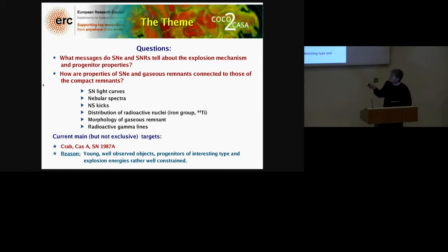We have diagnostic access to this by different possibilities which we explored recently: the light curve structures, the nebulous spectra, the neutron star kicks, and the observational aspects which we can look into in this respect, the distribution of radioactive nuclei, iron group in particular and titanium, which can be observed still at later stages, morphology of the remnants, and radioactive gamma-ray line profiles.